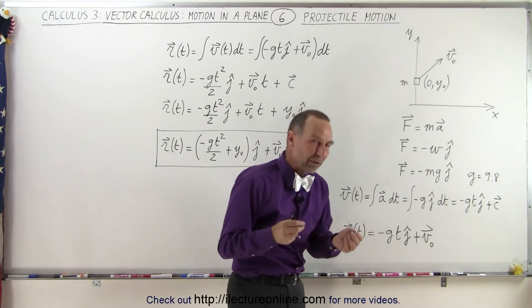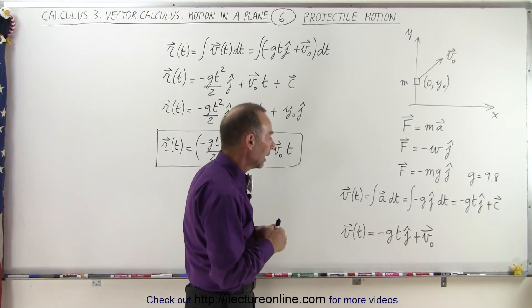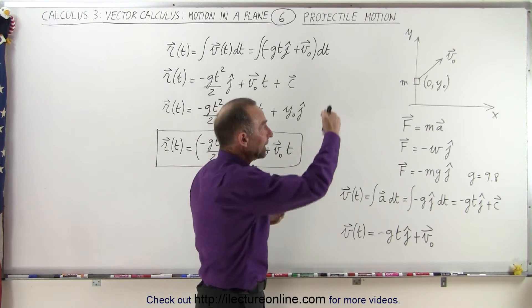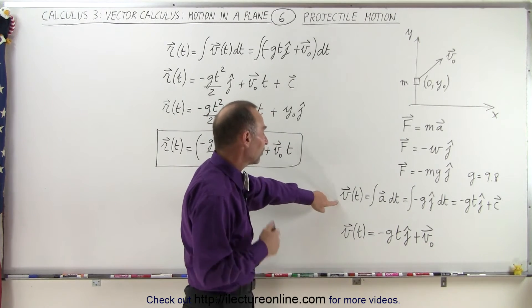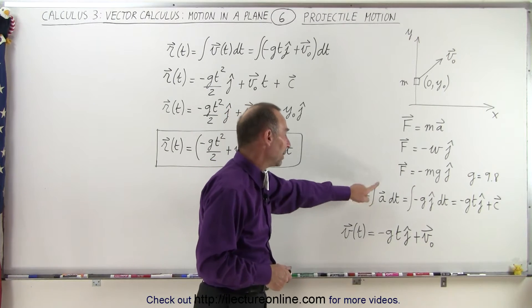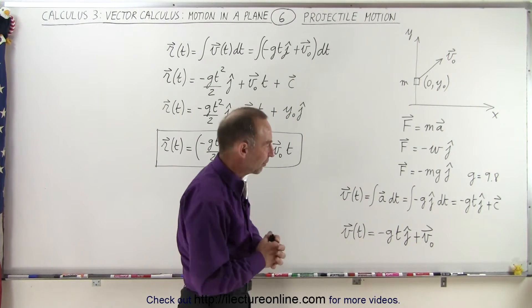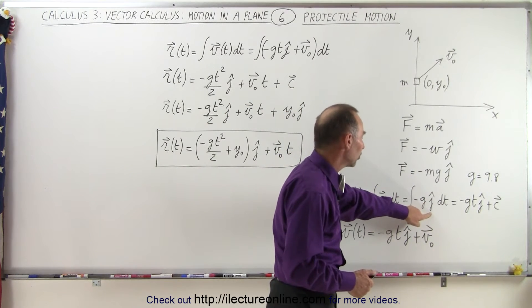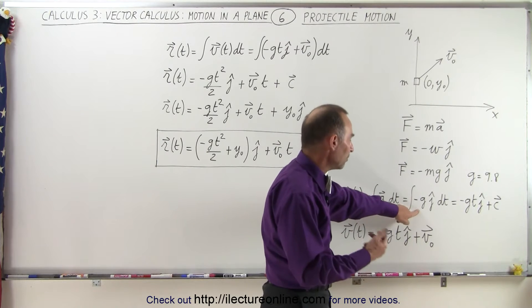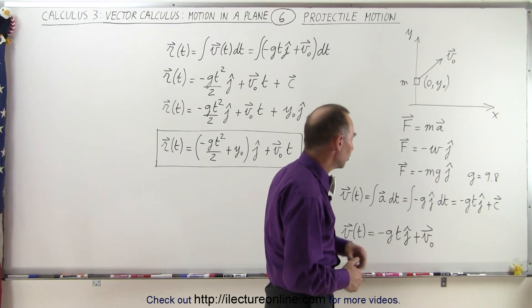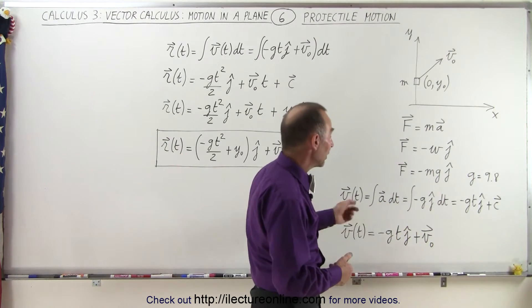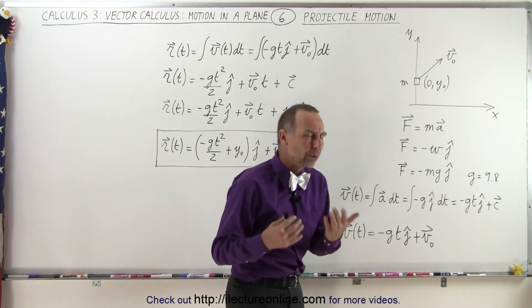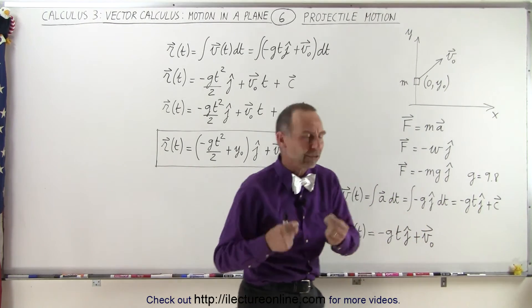Now if we want to express the velocity of that motion — the total velocity caused by the acceleration plus the initial velocity added together — we can say that the velocity can be described as the integral of the acceleration, just like we saw in the previous video. Since acceleration can be described as minus g in the j direction, we can replace the acceleration by minus g in the j direction times dt, integrate it, and we get minus g·t in the j direction plus some constant of integration, which will be in vector format.